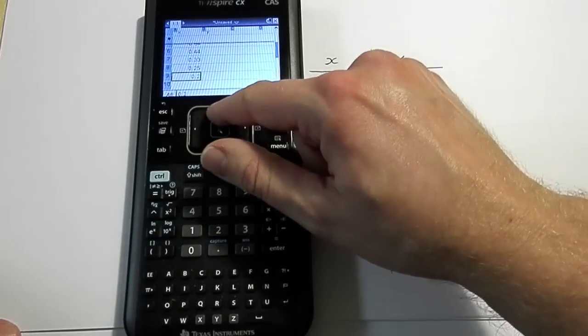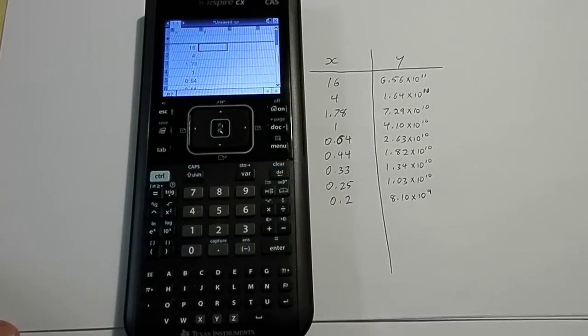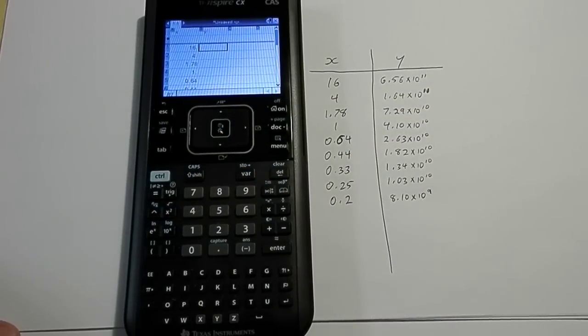And there we go. I'm going to scroll back up to the top again, and I'm going to shift over to the B column, the one that I've defined as my Y values.